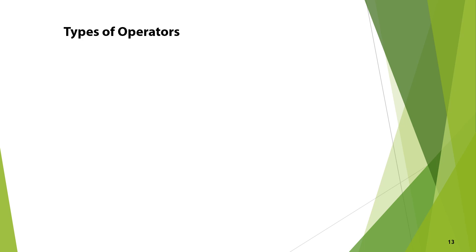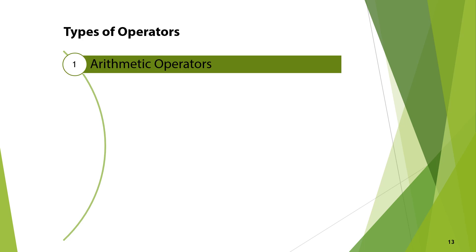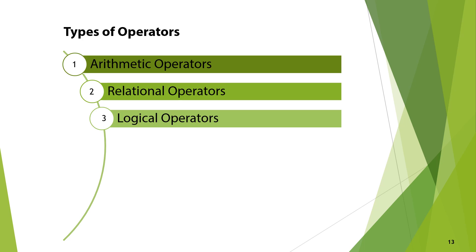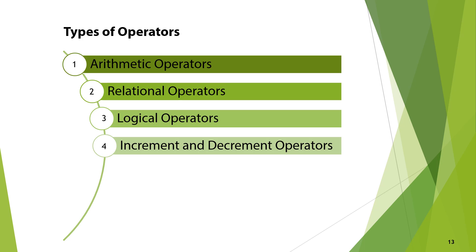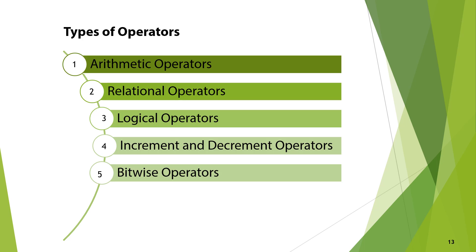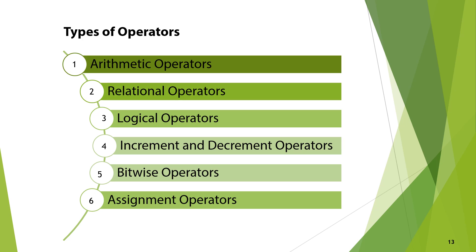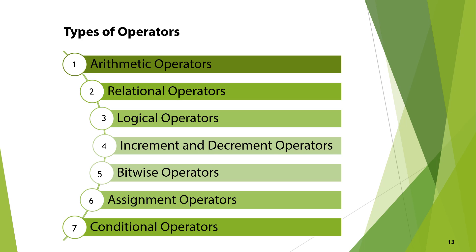Operators are divided into several types based on the operations they perform. The various types of operators are: arithmetic operators, relational operators, logical operators, increment and decrement operators, bitwise operators, assignment operators, and conditional operators. We will see each type one by one.